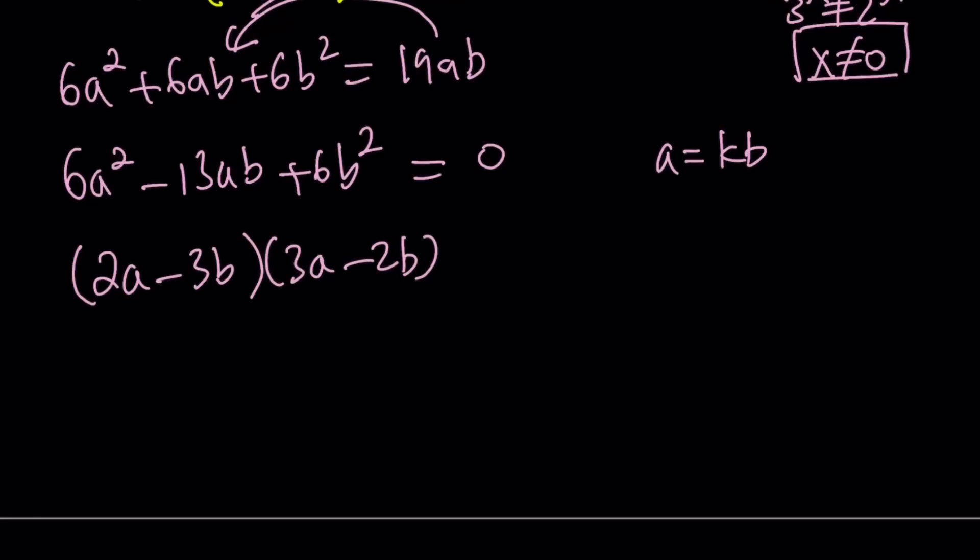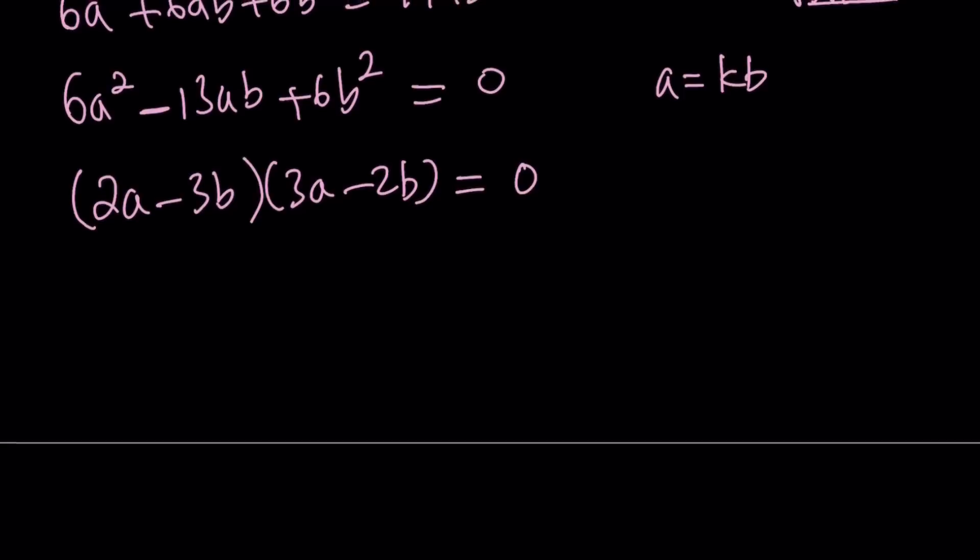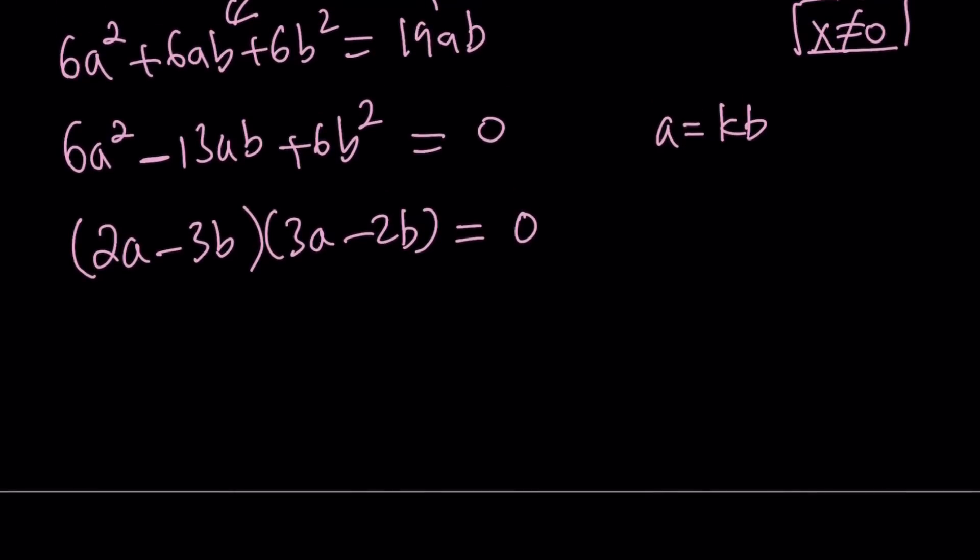And if you distribute, you're going to notice that we get negative 13ab from here. Trial and error will give you the solution like I said earlier, or you can use the x method, break it down in so many different ways. Easy, right? Hopefully.